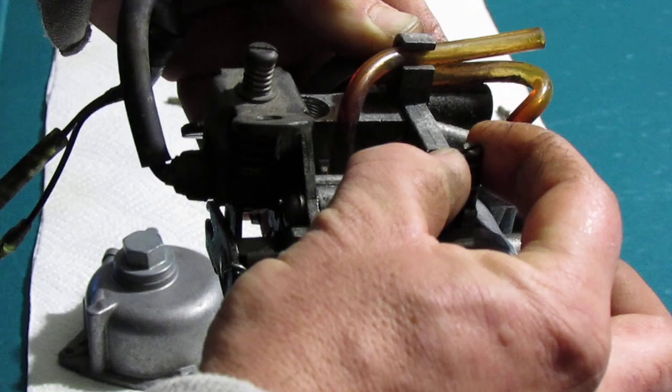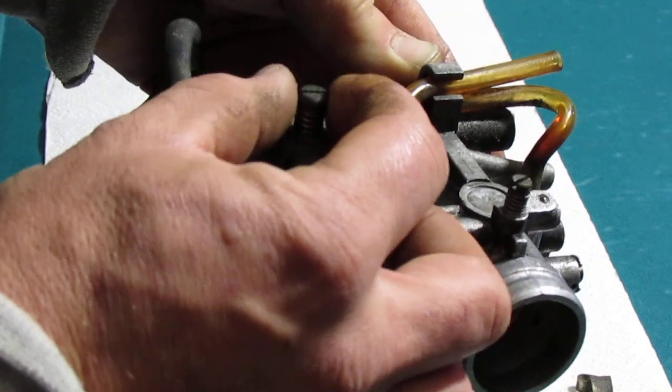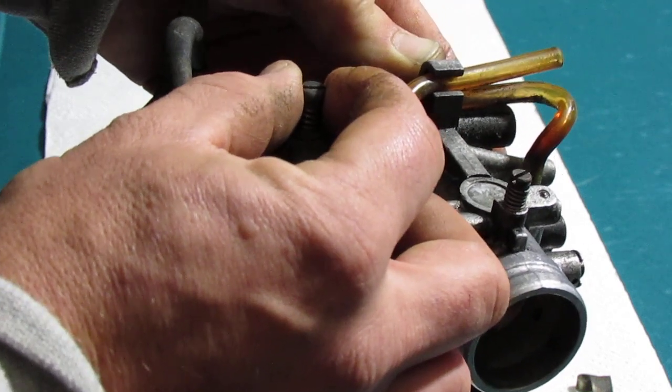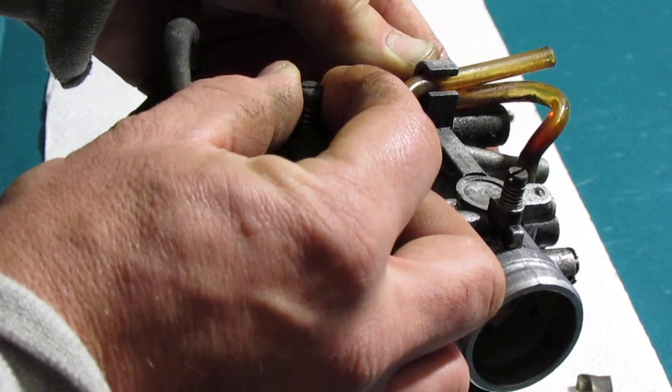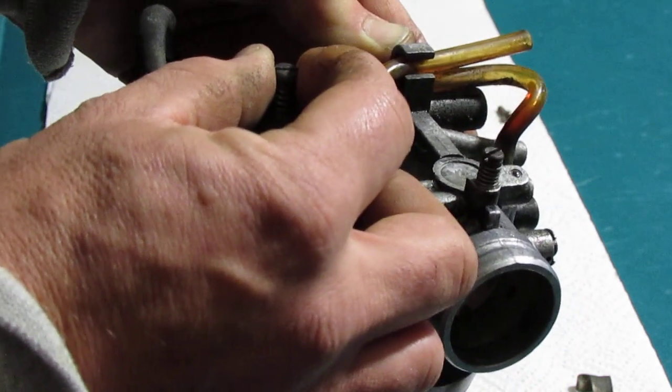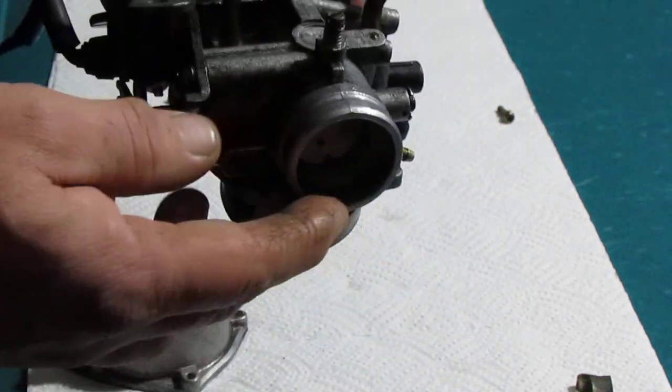And you want to drop your throttle stop screw - you want to crank that out until your engine drops down to about 1100 RPMs. And that's when you know you get your carburetor dialed in perfectly. We'll go through that on another video.